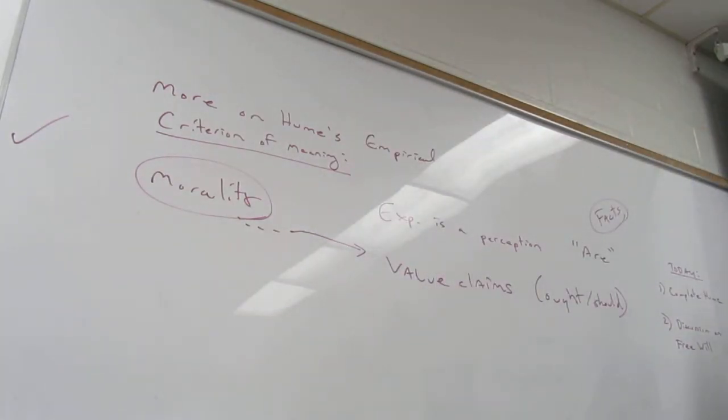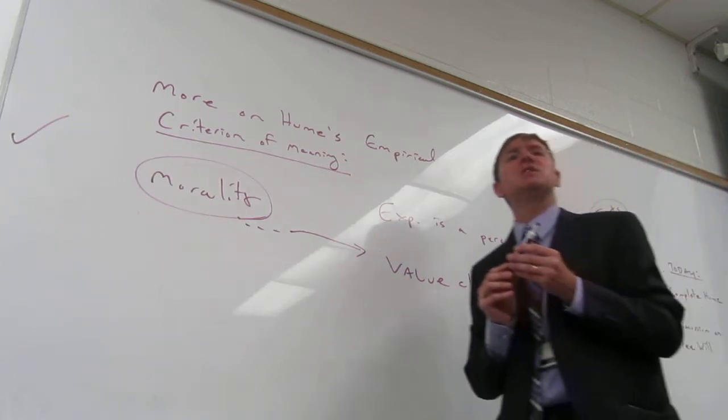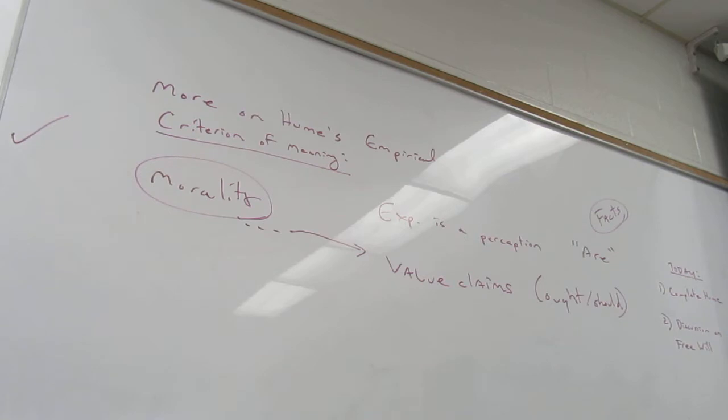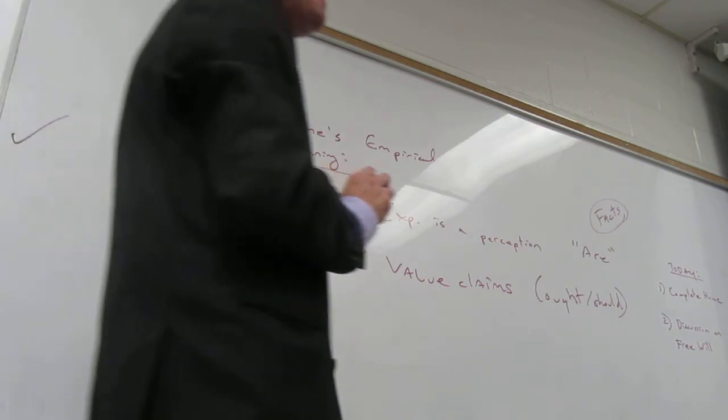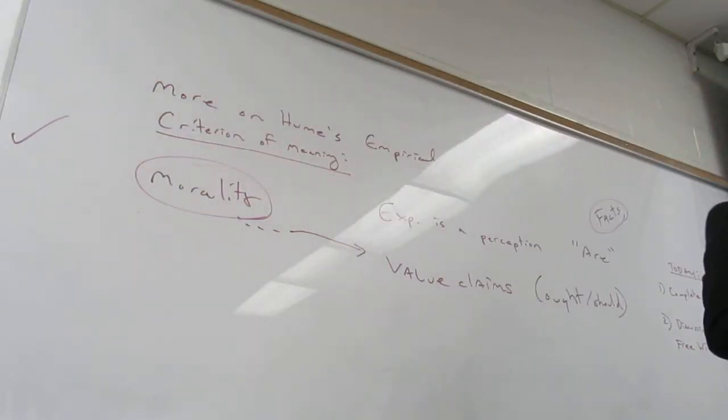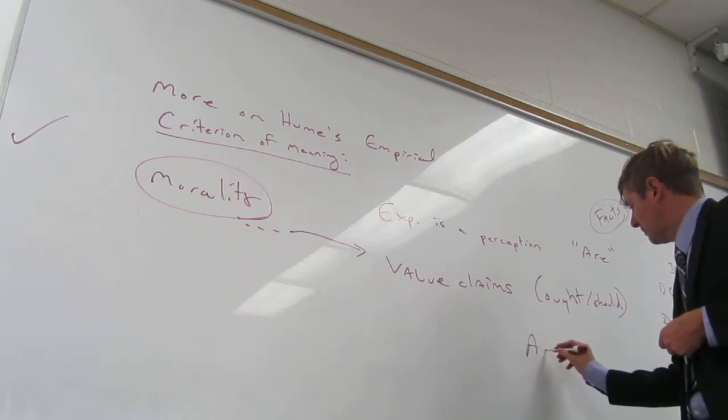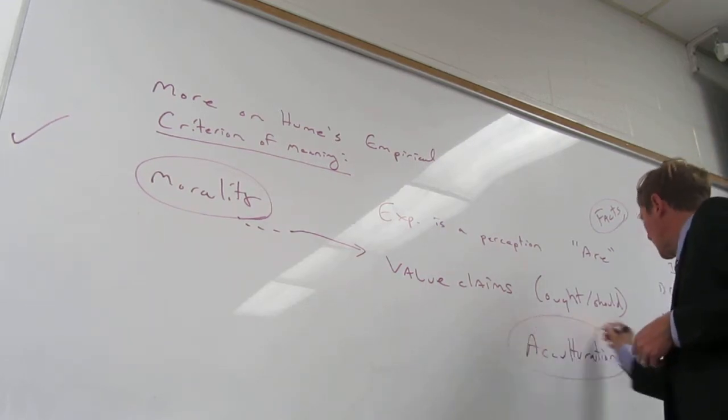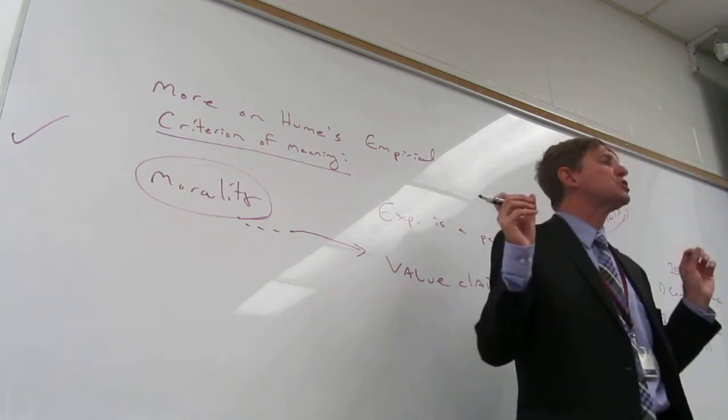And by the way it was not lost on David Hume that most of us have similar viewpoints about what's right and wrong because our views about right and wrong typically come from where? Because we tend to be acculturated in similar ways.